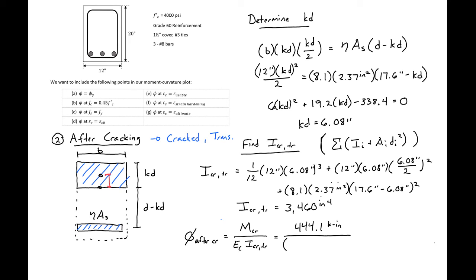Our Ec, which we found to be 3,600 ksi, and our I cracked transformed, which is 3,460 inches to the fourth. Then this will equal 3.56 times 10 to the negative fifth radians per inch.